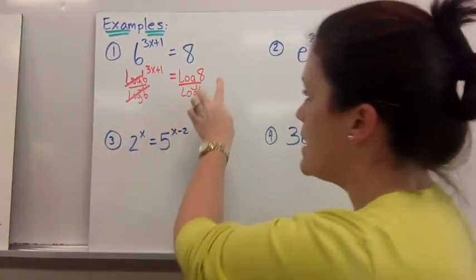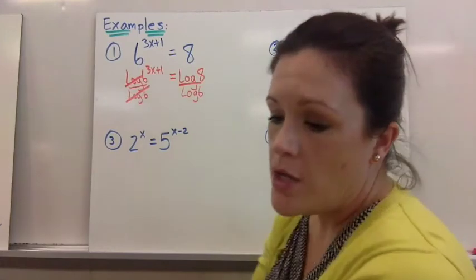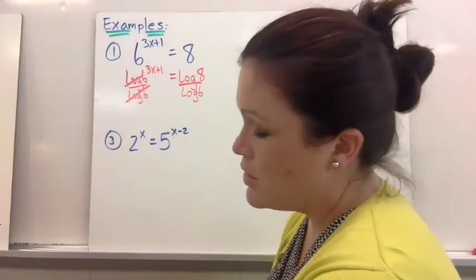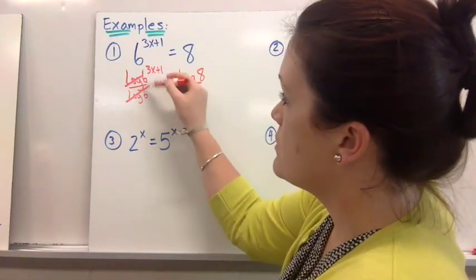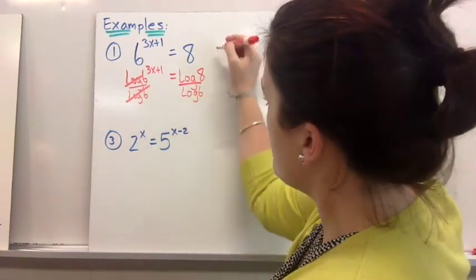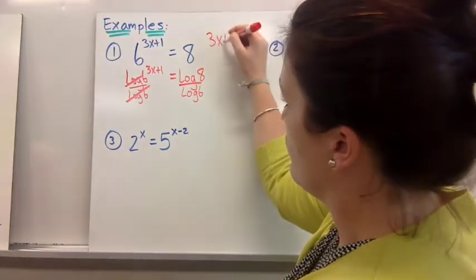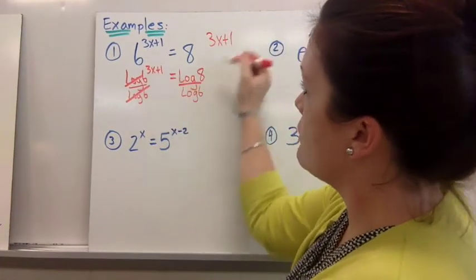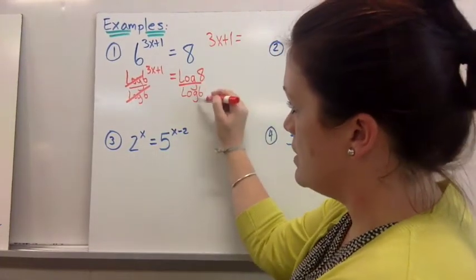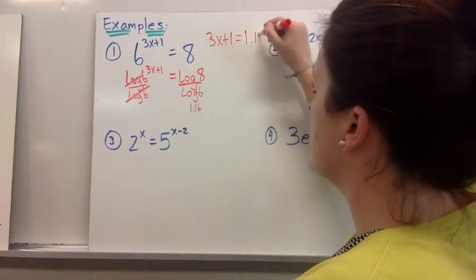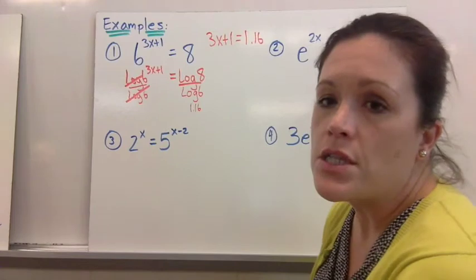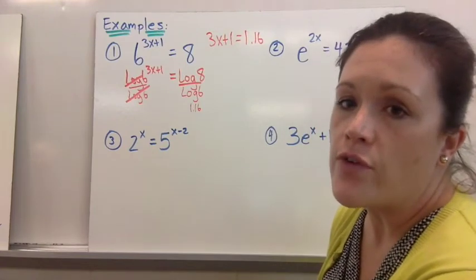So then you would need to type this in your calculator and you would get a decimal. The log of 8 divided by the log of 6 would be 1.16. These cancel out so you bring down, I'm going to write it over here to have more room. You'll have 3x plus 1 left over equals and then this in your calculator gives you 1.16.